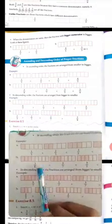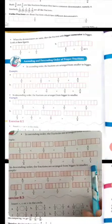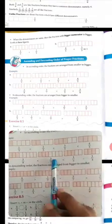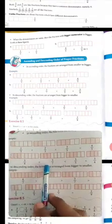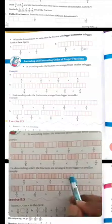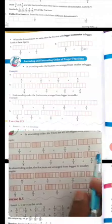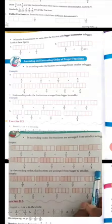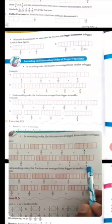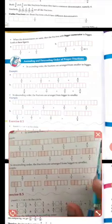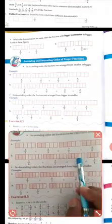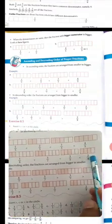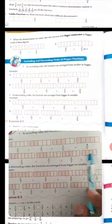Second example: 3 upon 8, 3 upon 7, 3 upon 5, and 3 upon 4. Here all numerators are the same (3, 3, 3, 3) but the denominators are different (8, 7, 5, 4). Since the numerators are the same and denominators are different, the fraction with the smaller denominator is biggest. So the smaller denominator number gives the biggest fraction.